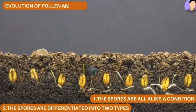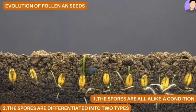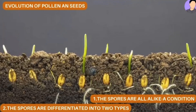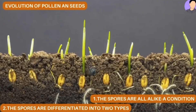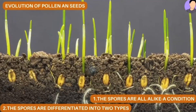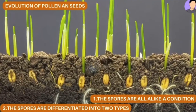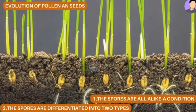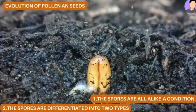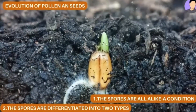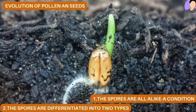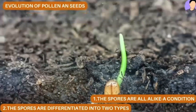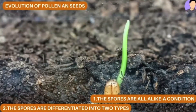Evolution of pollen and seeds. In algae and simple vascular plants, the spores are all alike — a condition called homospory. In gymnosperm and angiosperm lineages, the spores are differentiated into two types known as heterospores. This characteristic is the foundation for seed evolution.